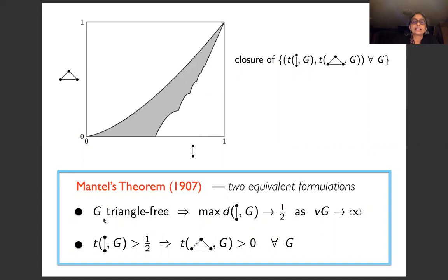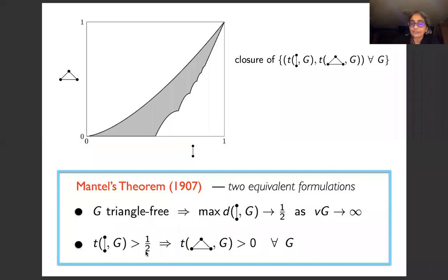Mantell's theorem says that if a graph is triangle-free, the maximum edge density approaches one half as the number of vertices goes to infinity — you can't have too many edges without forcing a triangle. In terms of homomorphism density: if the edge density exceeds one half, then the triangle density must become positive. You can see this directly in the graph profile picture: to the right of the half-point on the horizontal axis, the triangle density is strictly positive.